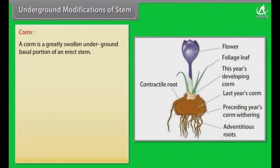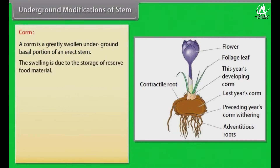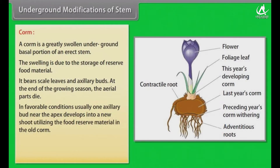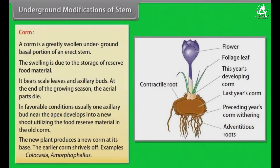A corm is a greatly swollen underground basal portion of an erect stem. The swelling is due to the storage of reserve food material. It bears scale leaves and axillary buds. At the end of the growing season, the aerial parts die. In favorable conditions, usually one axillary bud near the apex develops into a new shoot, utilizing the food reserve material in the old corm. The new plant produces a new corm at its base, and the earlier corm shrivels off.